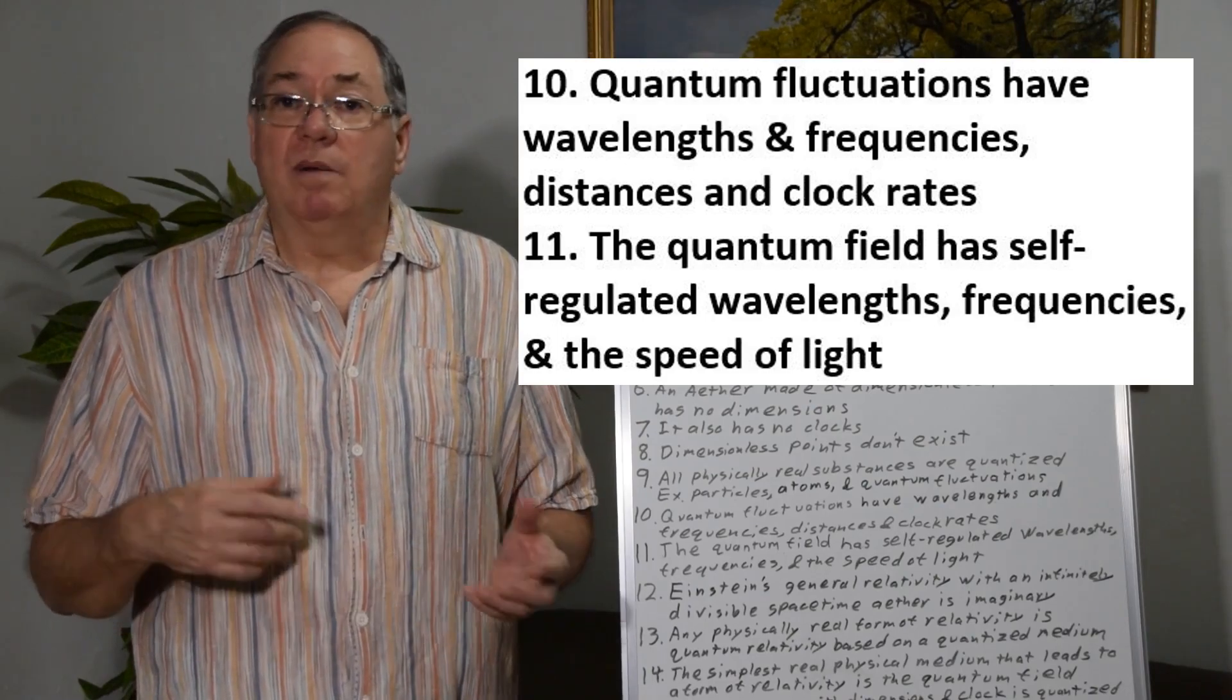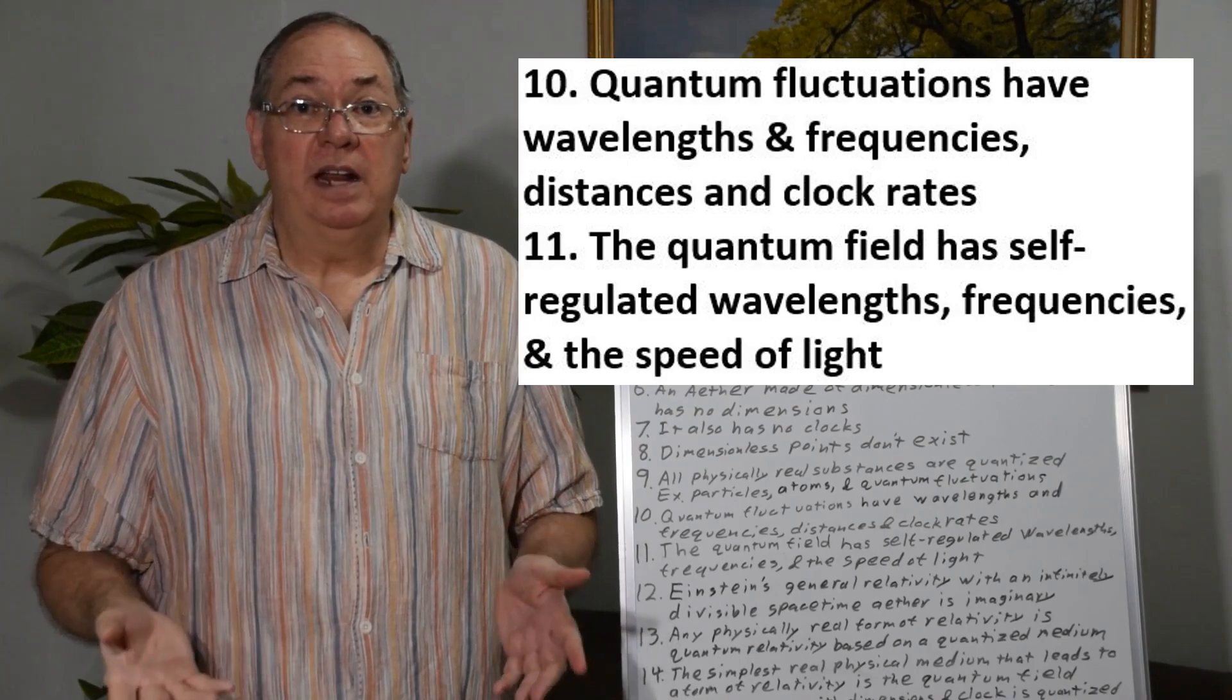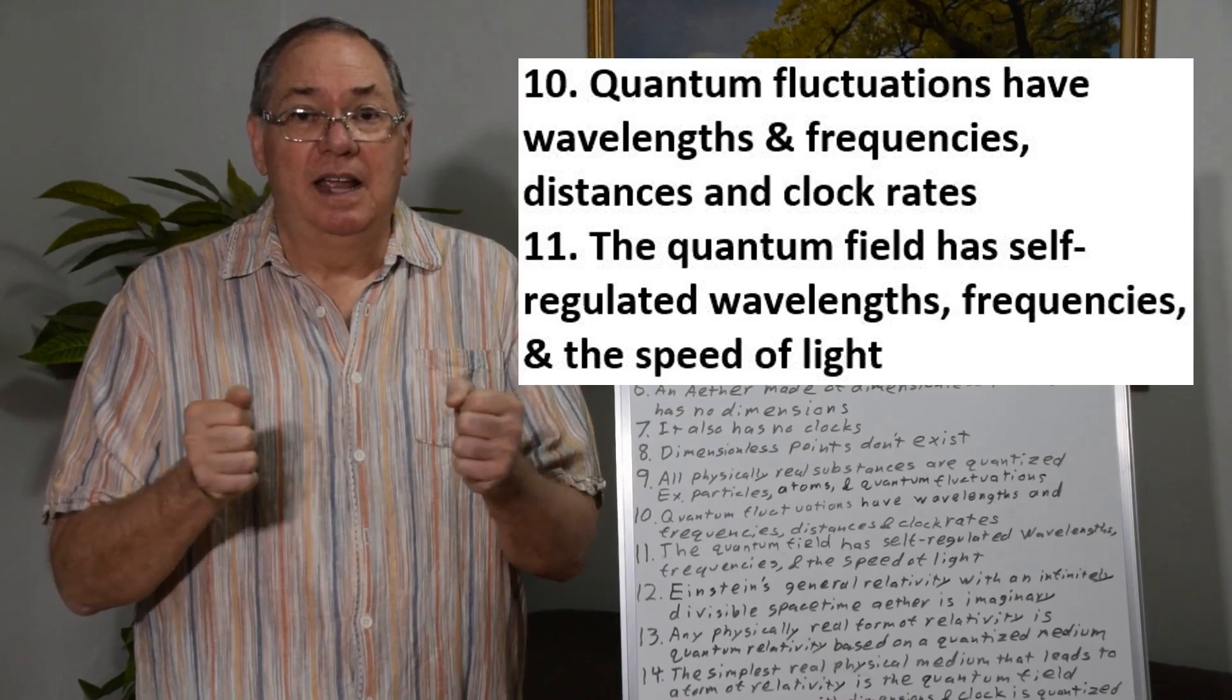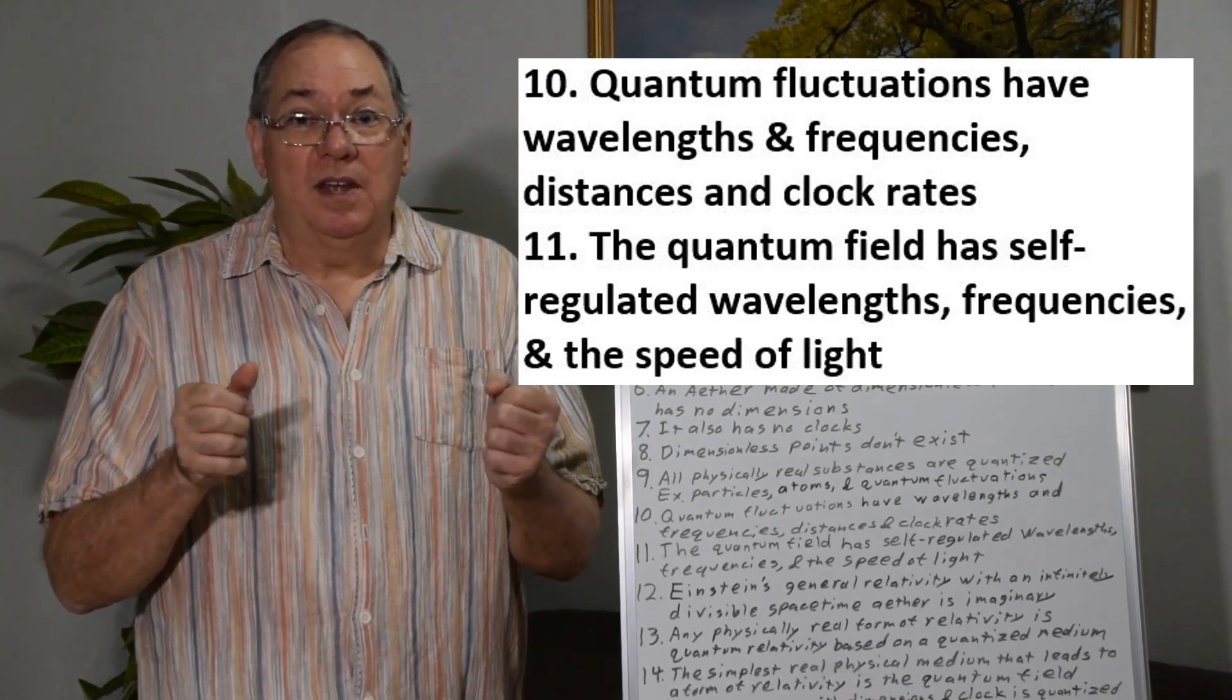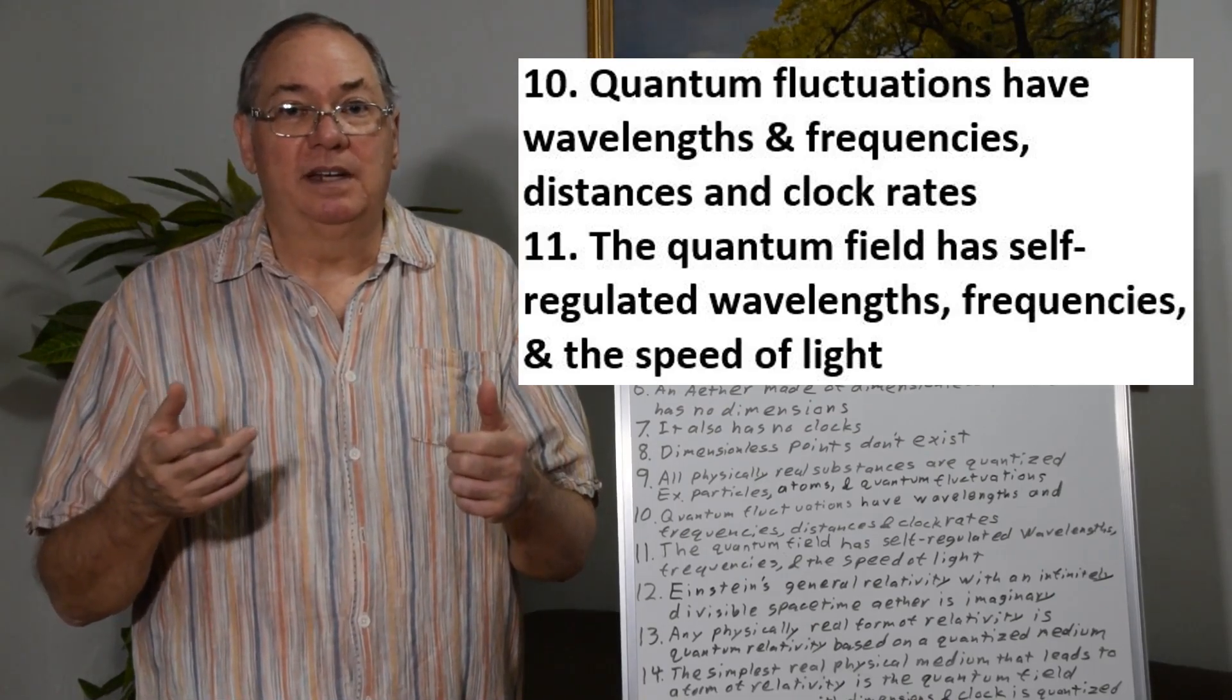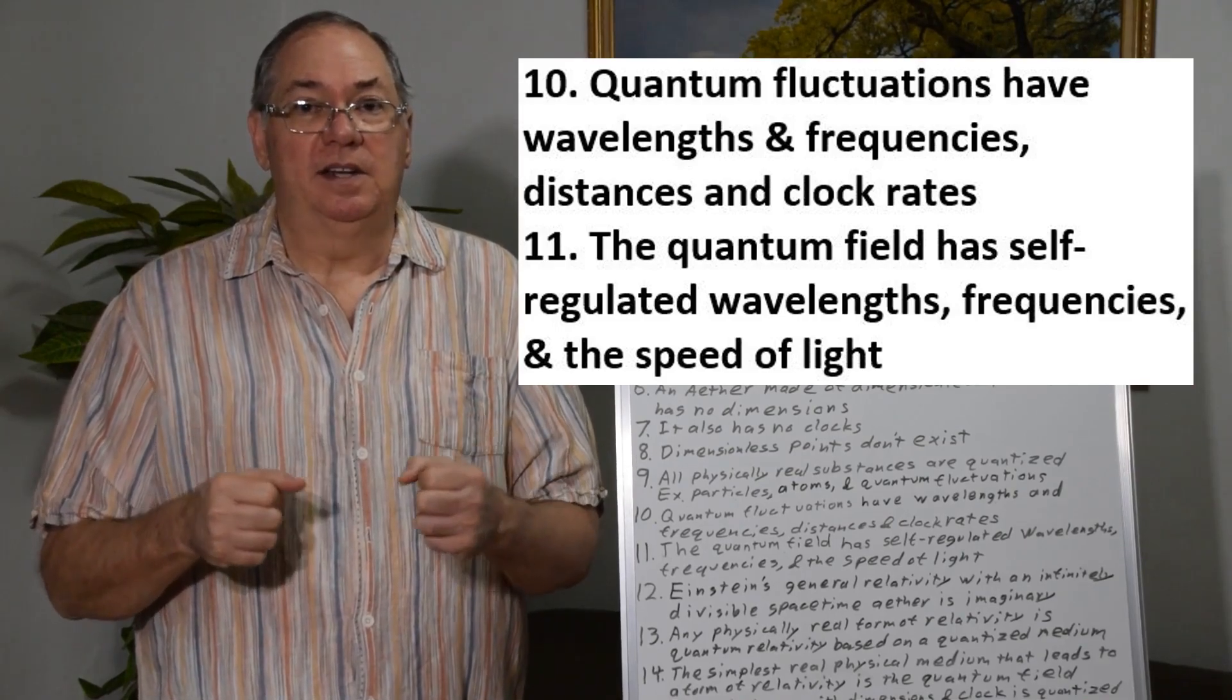The quantum field also has the advantages of its being self-regulating. The quantum fluctuations move in and out and they're dipoles. And so they cause other dipoles to rotate which cause other dipoles to rotate. But they're resisting rotation because they're moving against each other.